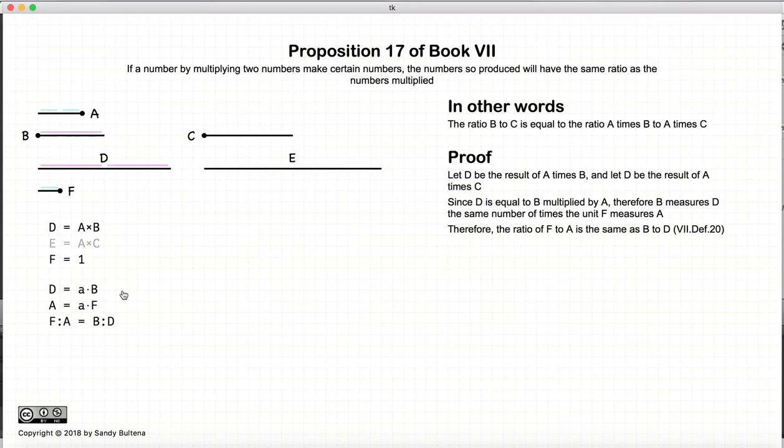Now, from the definition of ratios, if we have that B measures D the same number of times that F measures A, then the definition of ratios says that the ratio of F to A is equal to the ratio of B to D.